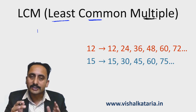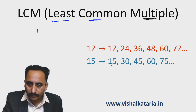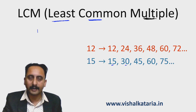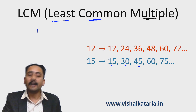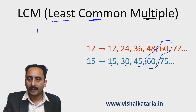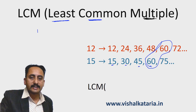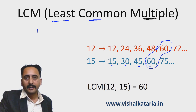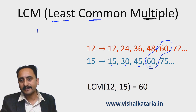Now I'm looking for a common multiple — and not only common, it has to be the least, meaning the smallest common multiple. Is 15 a multiple of 12? No. Is 30 a multiple of 12? No. Is 45 a multiple of 12? No. And 60? Yes — 60 is a multiple of 12 as well. So 60 is the first common multiple of 12 and 15, hence LCM of 12 and 15 is 60.